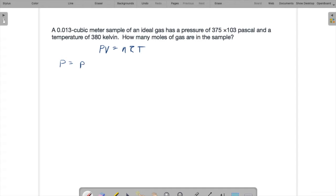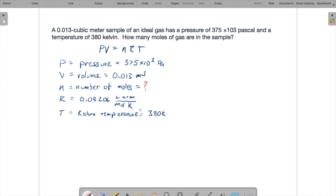So P equals pressure, which here is given as 375 times 10 to the 3rd Pascal. Notice here, this is written out as 375 times 103 when I copied and pasted. That's because the superscript did not come through in the formatting, but that's what it was. It was a superscript. So it's wise to remember that if you copy and paste, we're not actually telling you to multiply 375 by 103. V is volume, and here it's given as 0.013 cubic meters. N is number of moles, and that's what we're trying to find. R is the ideal gas constant, 0.08206 liter atmosphere per mole Kelvin. And T is absolute temperature, Kelvin temperature. And in this case, it's 380 Kelvin.